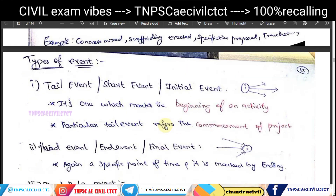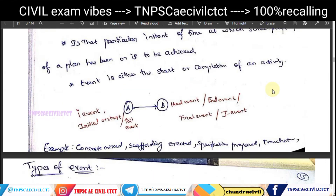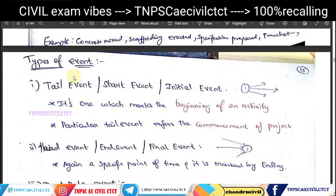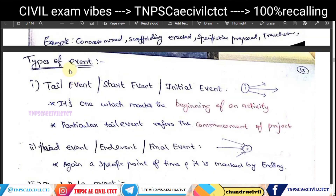Examples of activities include concrete mixing, scaffolding, and specification preparation. Examples of events include: concrete mixed, scaffolding complete, and specification prepared. There are a total of five types of events.